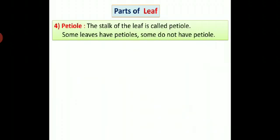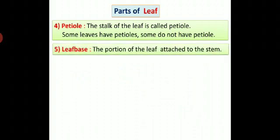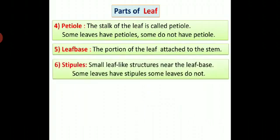Petiole: the stalk of the leaf is called petiole. Some leaves have petiole where some do not have petiole. Leaf base: the portion of the leaf attached to the stem is known as leaf base. Stipules: small leaf-like structures near the leaf base are known as leaf stipules. Some leaves have stipules, some leaves do not have stipules.